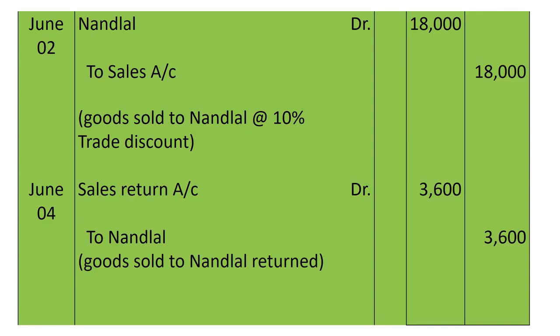Next entry: Nand Laal returned goods of list price 4,000. Since we gave 10% trade discount when selling, we also calculate 10% trade discount on returns. So 10% of 4,000 is 400; 4,000 minus 400 equals 3,600. The entry is made with rupees 3,600: Sales Return account debited to Nand Laal 3,600. Narration: goods sold to Nand Laal returned.